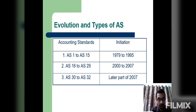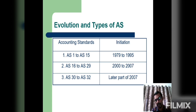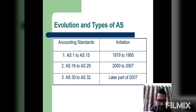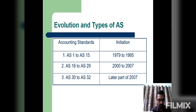Now, the evolution and types of Accounting Standards. Accounting Standard Number 1 through Accounting Standard Number 5 were issued in India from 1979 to 1995. Accounting Standard Number 16 to Accounting Standard Number 29 were issued in India from 2000 to 2007. Accounting Standard Number 30 to Accounting Standard Number 32 were issued in India in the later part of 2007.